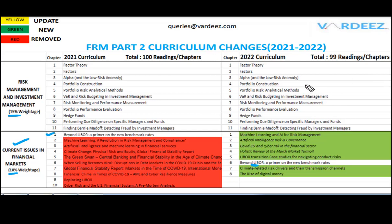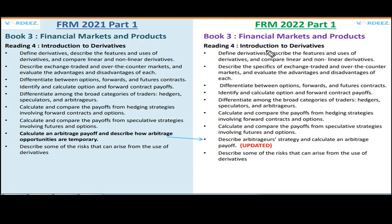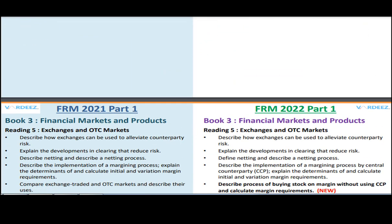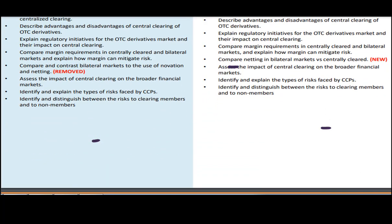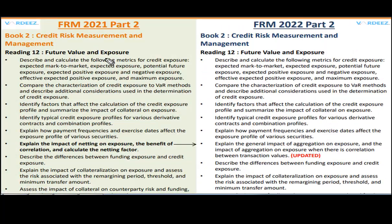Now I'll show you another file — available for download — which covers the individual learning objective changes for FRM Part 1 and Part 2. I've made notations showing what has been updated, for example indicating that a specific learning objective has been updated to a new one. You can go through the PDF to see all the changes across all chapters. This is for Part 1, and there is also a Part 2 PDF file showing the 2021 learning objectives alongside the 2022 learning objectives.